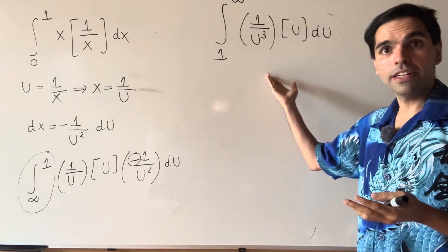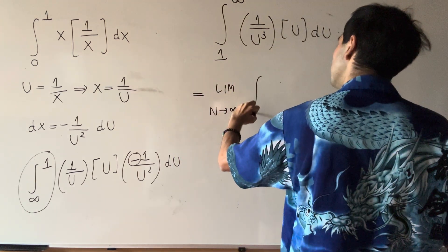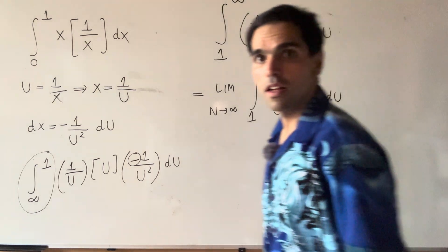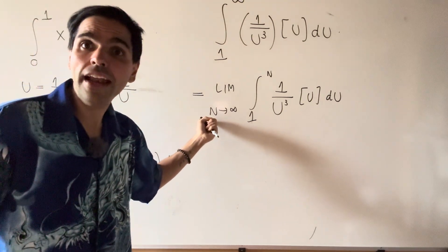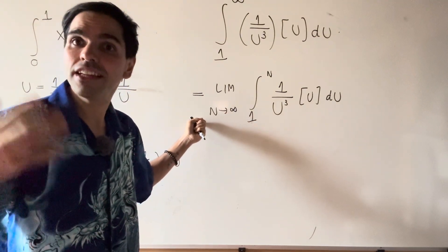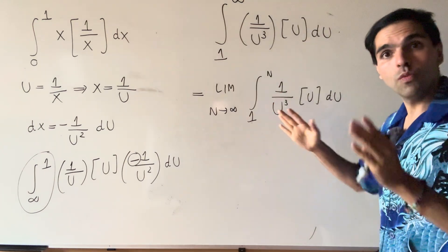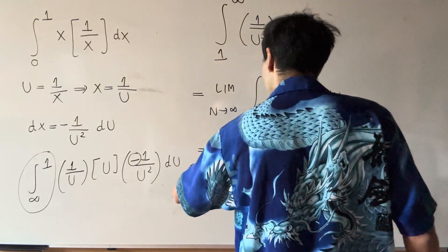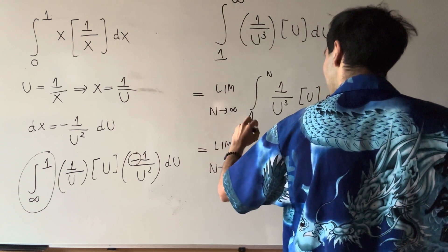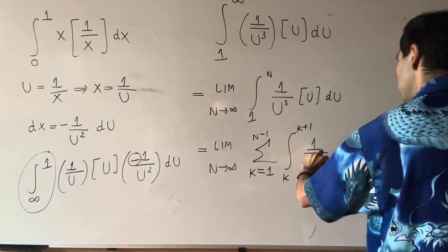Now, this is an improper integral, which I'd like to remind you is the limit of proper integrals. So that's the limit as n goes to infinity of the integral from 1 to n of 1 over u cubed times floor of u du. Since n can be taken as an integer, we can split this up as the limit as n goes to infinity of the sum from k equals 1 to n minus 1 of the integral from k to k plus 1 of 1 over u cubed times floor of u du.